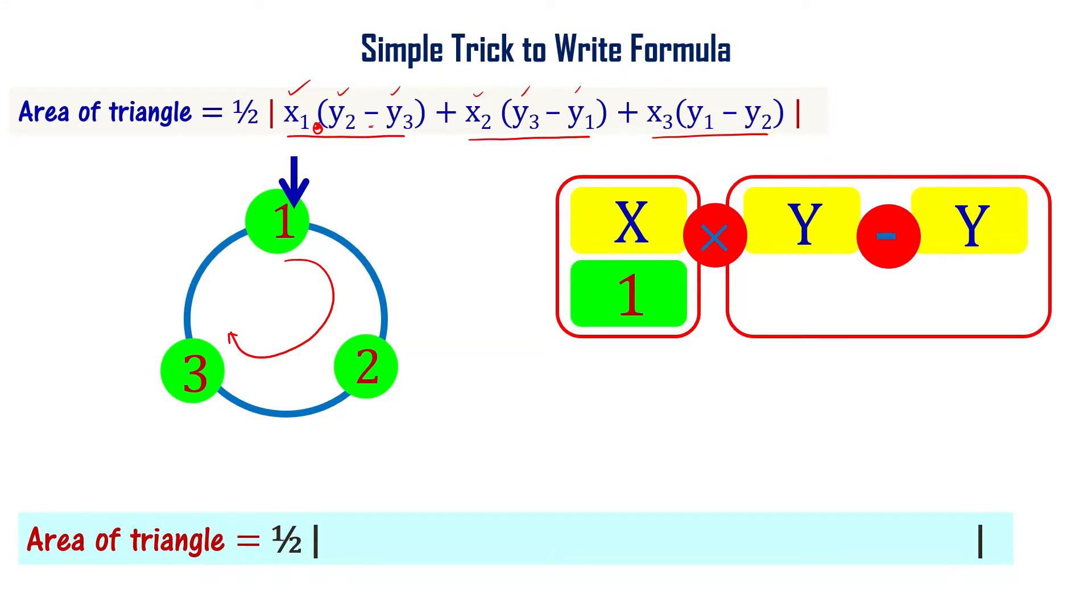You start rotating clockwise, you see y₂, so it's x₁ times y₂ minus y₃.